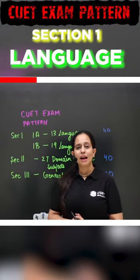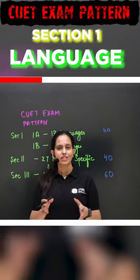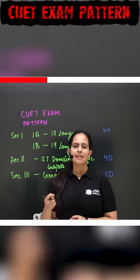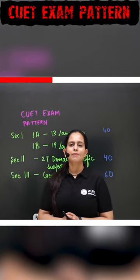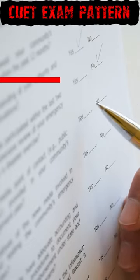Section 1 is related to your language. There are two sections in which there will be 13 and 19 languages. You will have to answer 50 questions in which you will have to answer 40 questions.